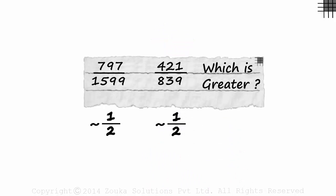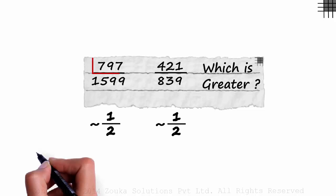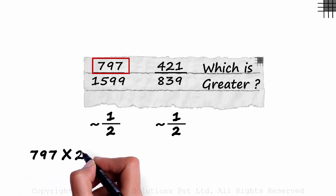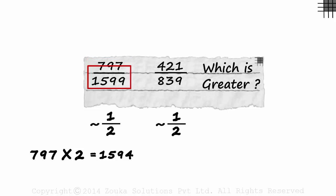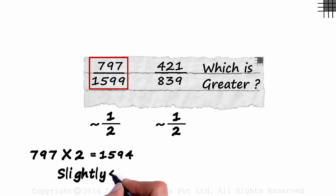What do we do now? Do we calculate the value of each fraction? Let's try calculating 797 times 2. It equals 1594. The denominator of the fraction is 1599. Think about it. 797 by 1594 is exactly half. So 797 by 1599 will be, yes, it will be slightly less than half.